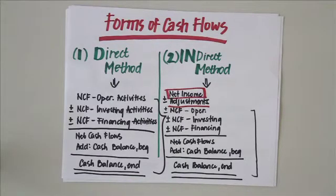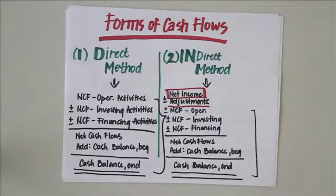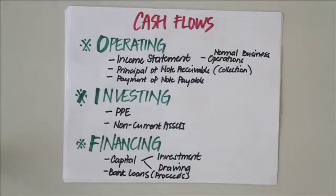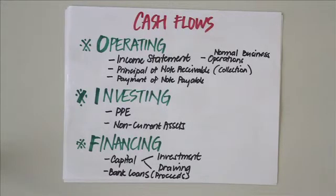The direct method is definitely a lot simpler than the indirect method, so basic accounting students only need to focus on the direct method. The indirect method is taught in advanced accounting courses for BSA majors. Later I'm going to show you how to prepare your own statement of cash flows. There are three main categories in the direct form: operating activities, investing activities, and financing activities.